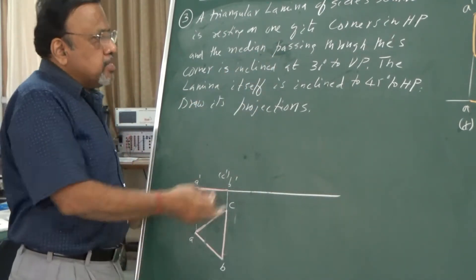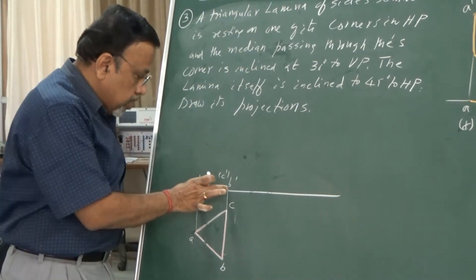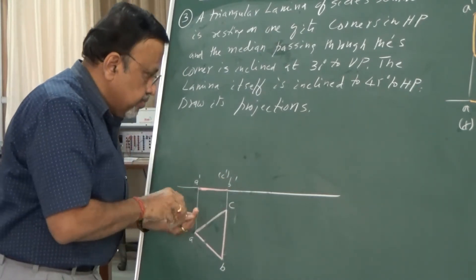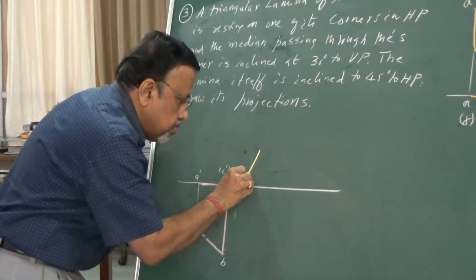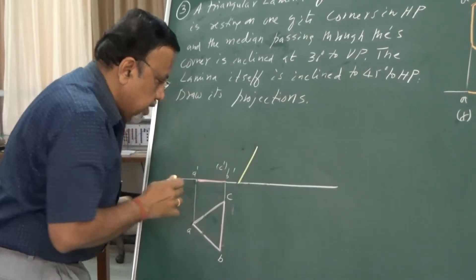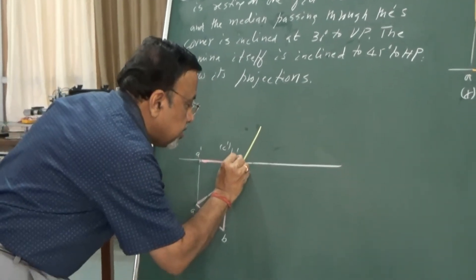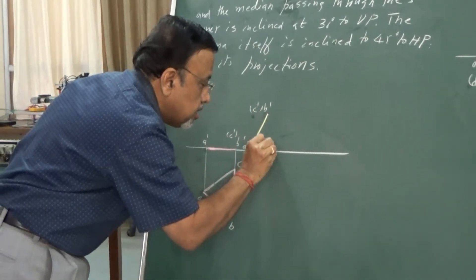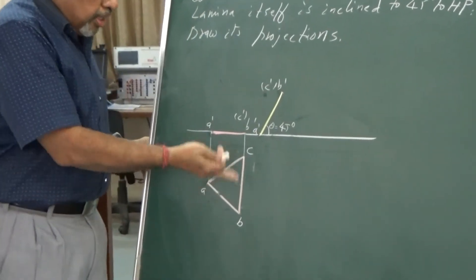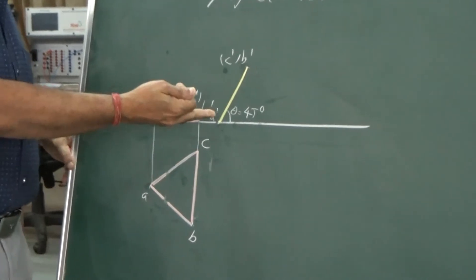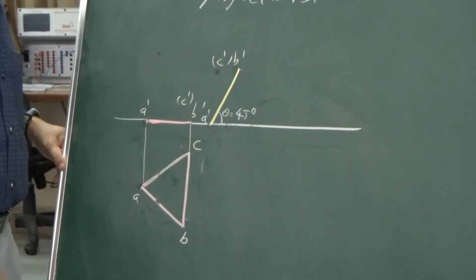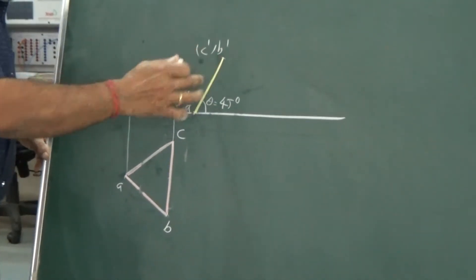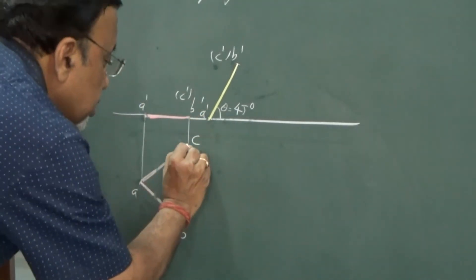Since I want corner A to be in HP, I tilt the figure so that A is on XY, inclined at 40 degrees. This gives us A-dash, B-dash, C-dash in the new front view. To get the new top view, draw vertical projectors from the new front view and horizontal projectors from the previous top view. The top view will be smaller in size since the lamina is now inclined.